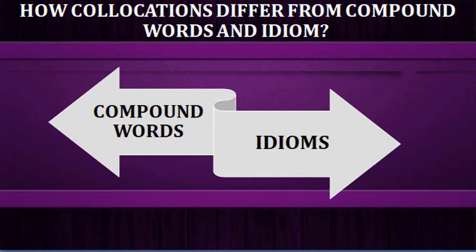Idioms are groups of words in a fixed order whose meaning cannot be guessed from the meanings of individual words. Although idioms involve joining words, the combined meaning is not the surface or literal meaning. For example, 'pass the buck' is an idiom meaning to pass responsibility for a problem to another person to avoid dealing with it oneself. So compound words have compositional meanings, idioms have changed meanings that cannot be predicted from individual words, while collocations are habitual co-occurrences of words forming a predictable connection.